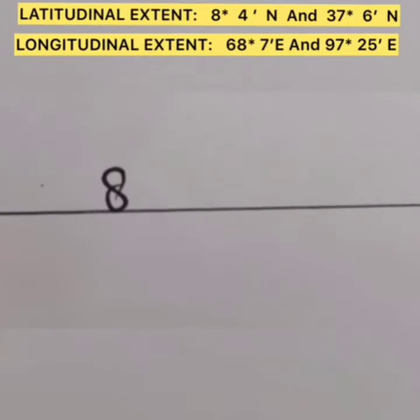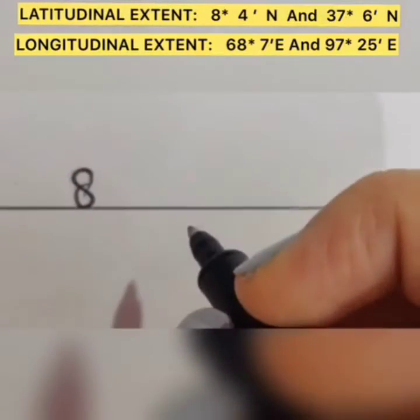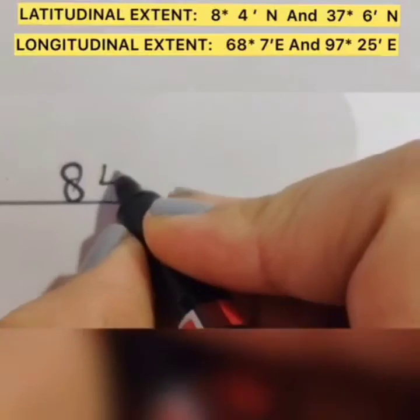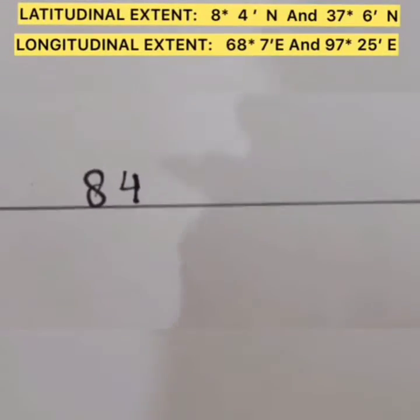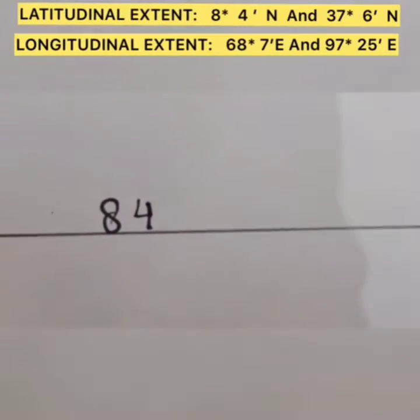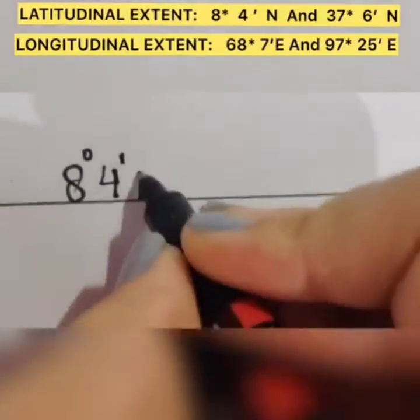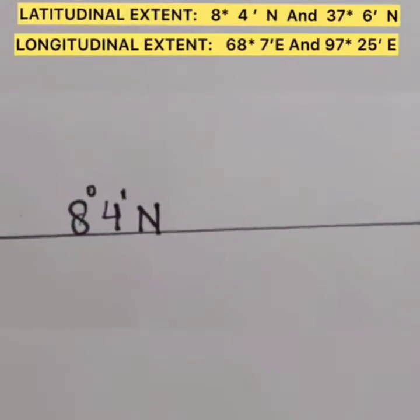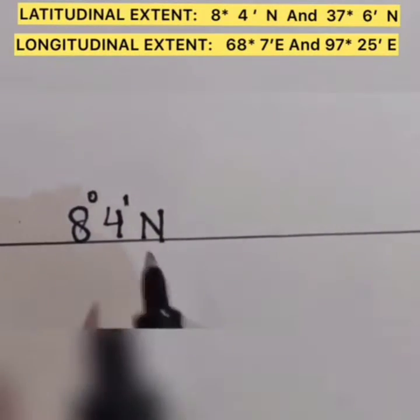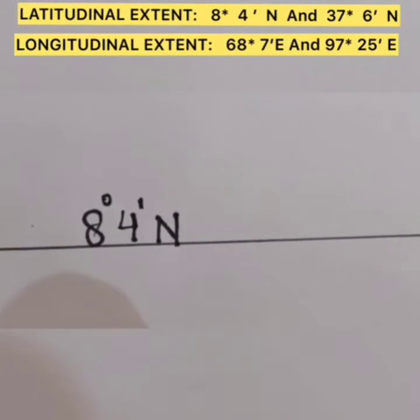We are referring to a single digit and that is 8. 8 is divisible by 2 and we get 4. So we get the southernmost latitude of India as 8 degree 4 minutes north. The symbolic reason of degrees and minutes will be told to you in your next class.